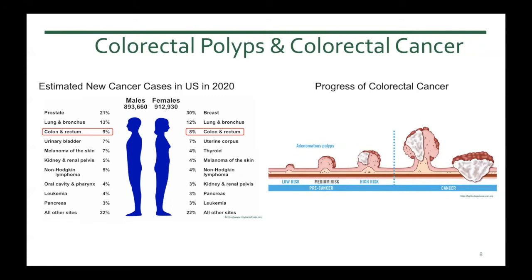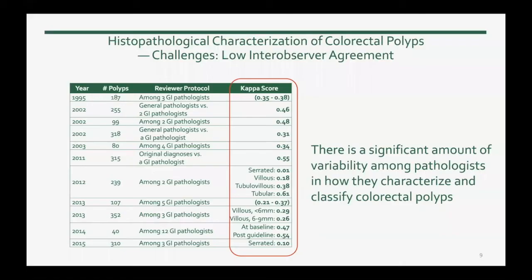The tricky thing about colorectal polyps is they recur. So after the baseline colonoscopy, the patient needs to undergo surveillance, and the frequency of these follow-up surveillance colonoscopies depends on the histological classification of polyps at the baseline colonoscopy. But this histological classification is not an easy task.